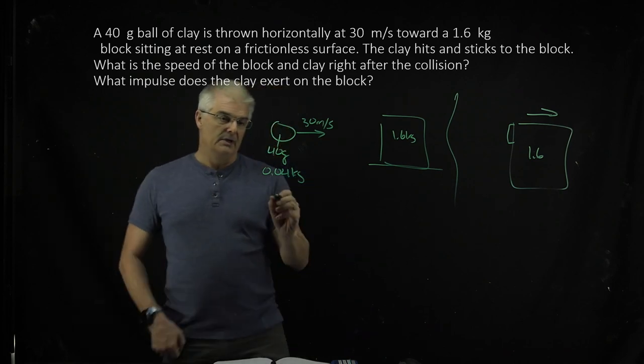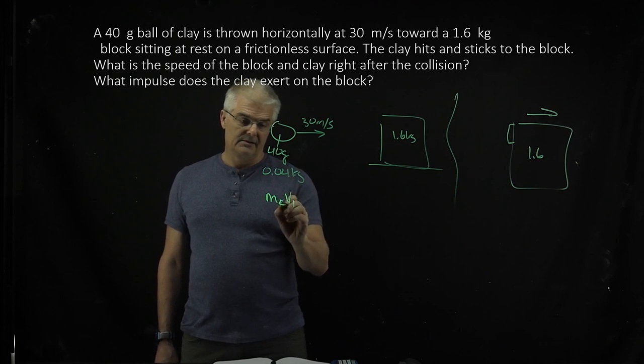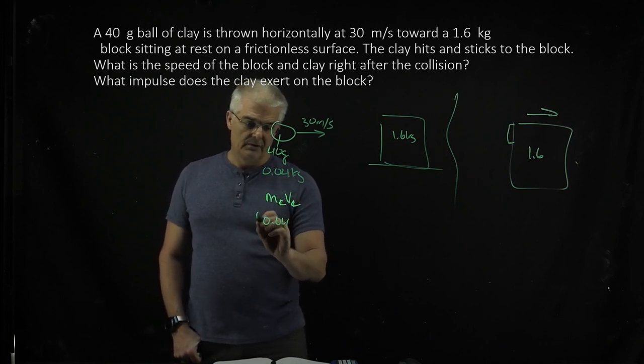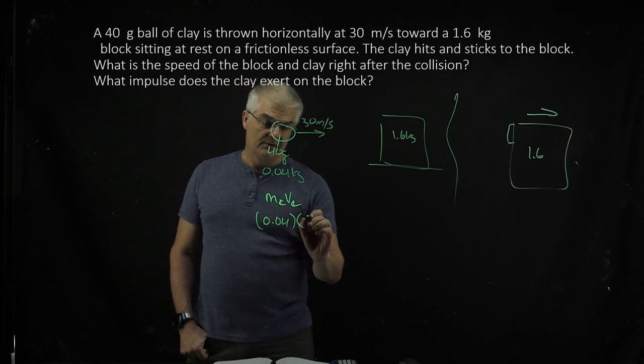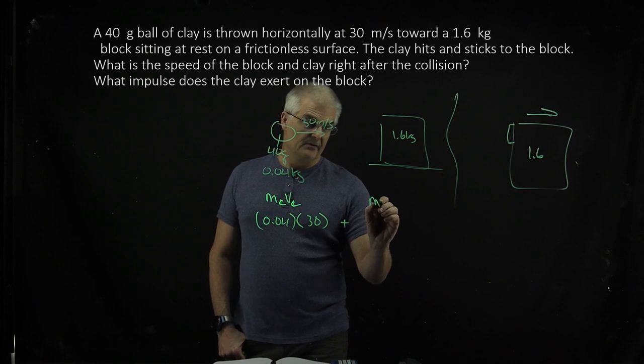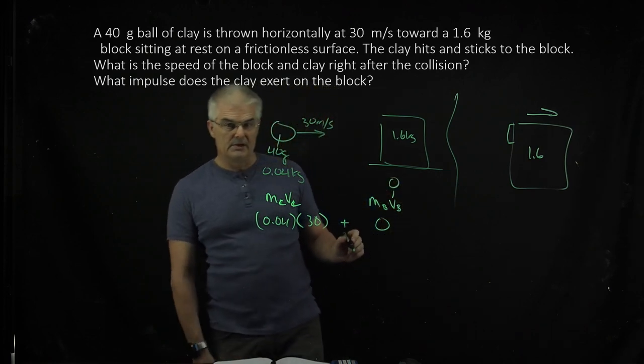you're just going to do M1 V1, or M clay, let's say C for the clay. So this will be 0.04 times 30 plus the mass of the block times the velocity of the block. But this whole term becomes 0 because the velocity is 0. He's not moving,